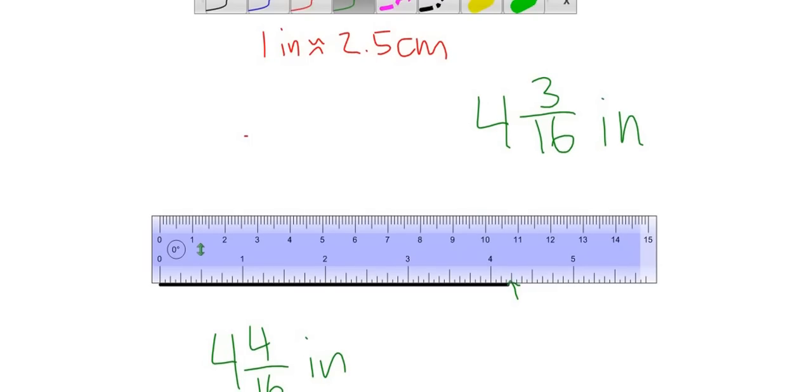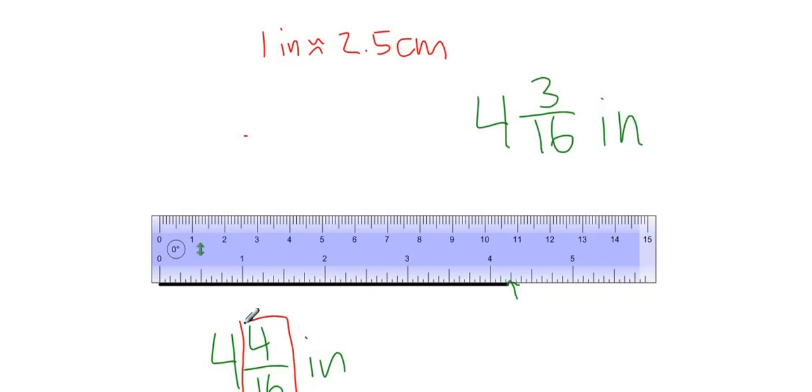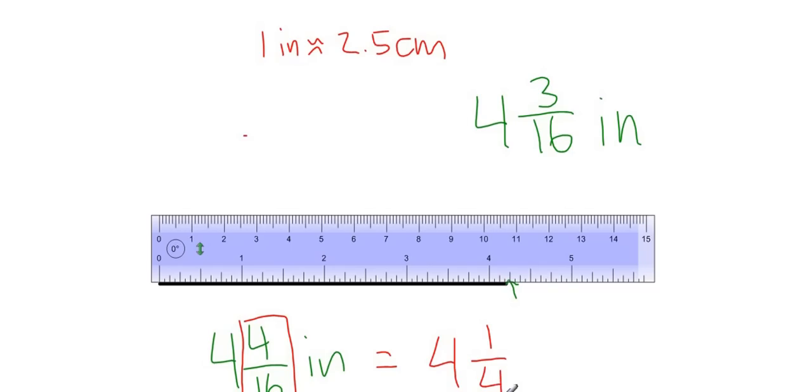Notice this fraction here, it can be reduced. Both the numerator and denominator are even, which means it can be reduced. And that's what you would do. So we would say that this is 4 and a quarter inches.